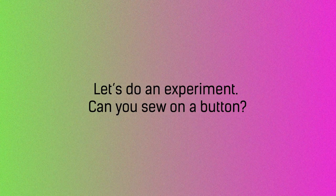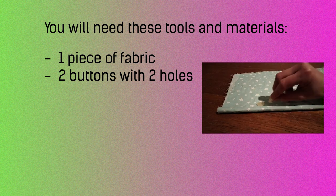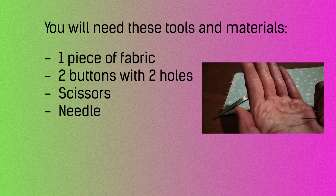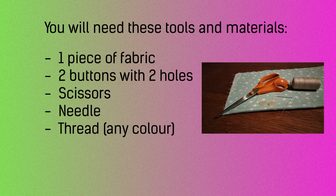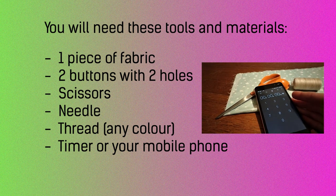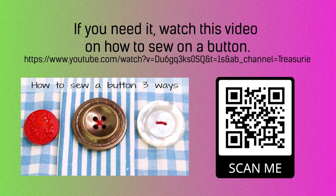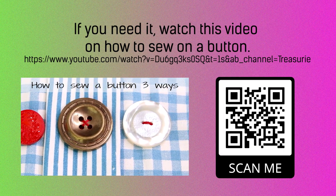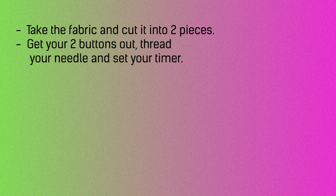Task — let's do an experiment. Can you sew on a button? You will need these tools and materials: one piece of fabric, two buttons with two holes, scissors, needle, thread of any color, and a timer or your mobile phone. If you need it, watch a video on how to sew on a button. Take the fabric and cut it into two pieces. Get your two buttons out, thread your needle, and set your timer.